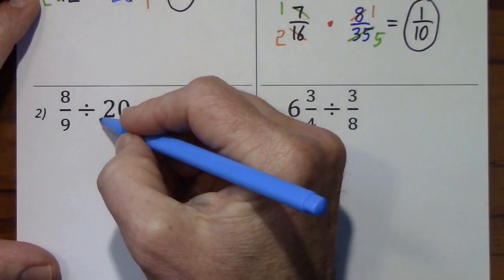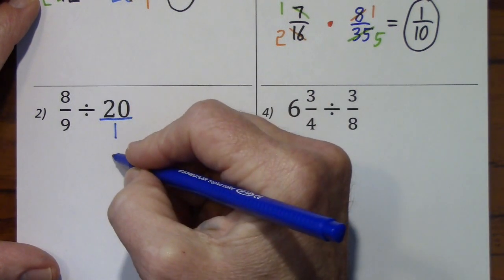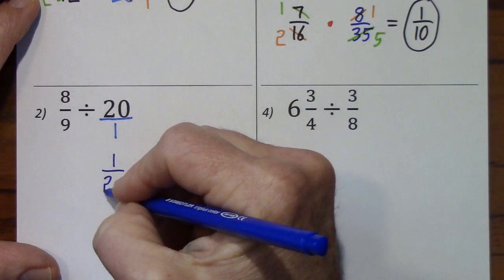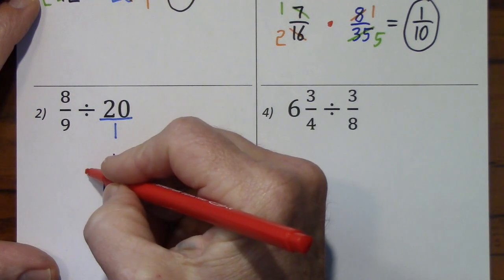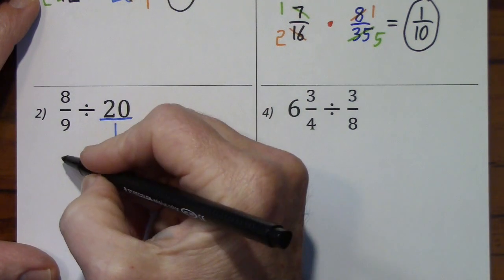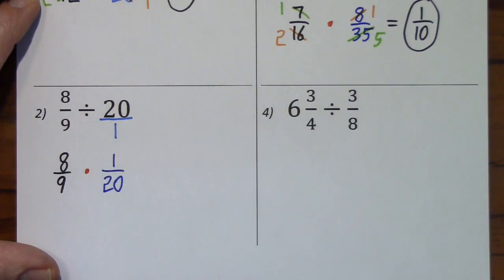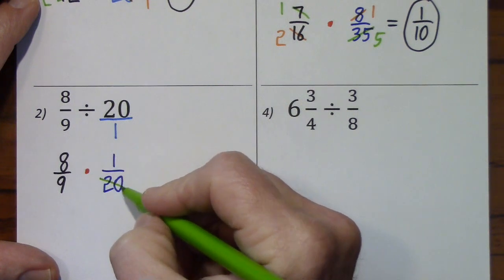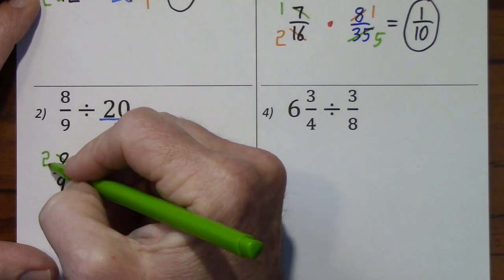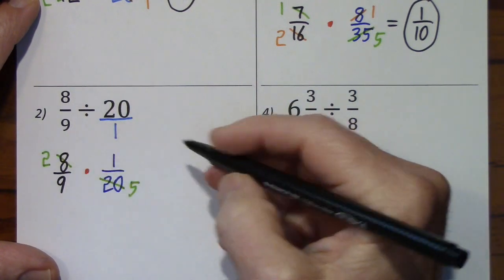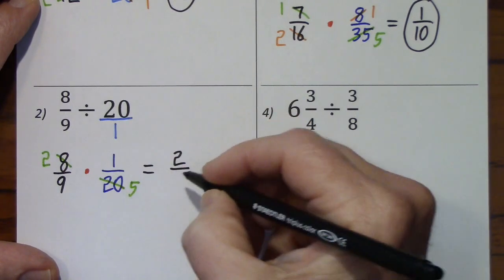I'll rewrite 20 as an improper fraction — just put it over a 1. Now I'll take the reciprocal. Change division to multiplication. Bring down the 8 ninths. We can simplify. Divide by 4. Divide by 4. And this leaves us with 2 over 45. Divide by 5.